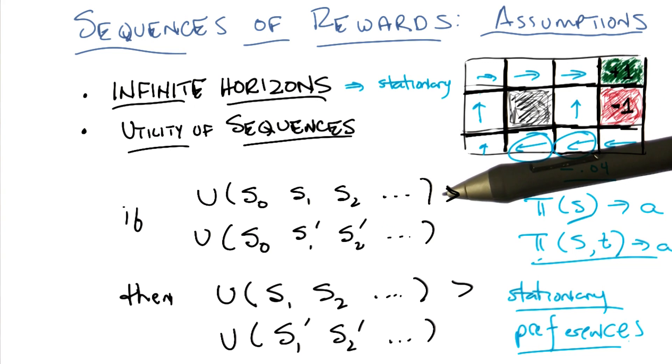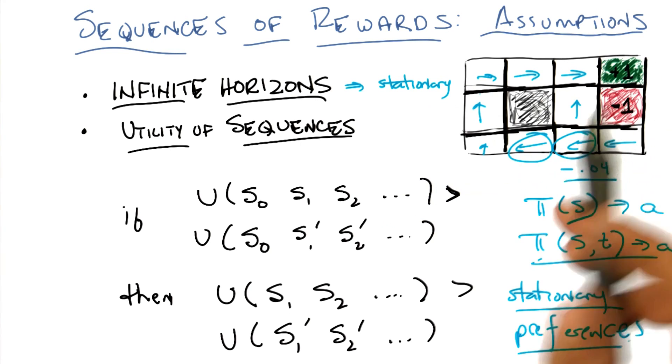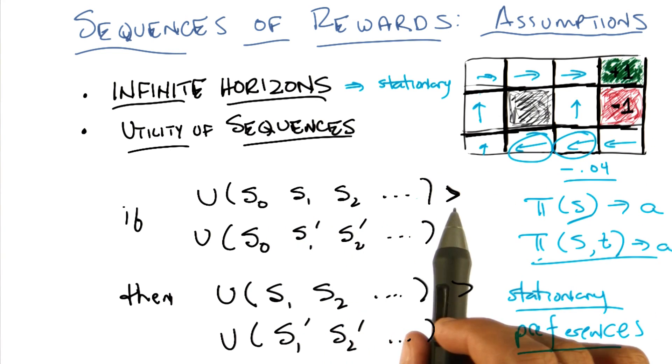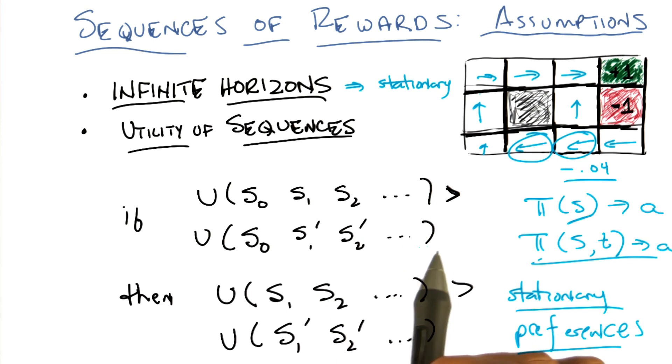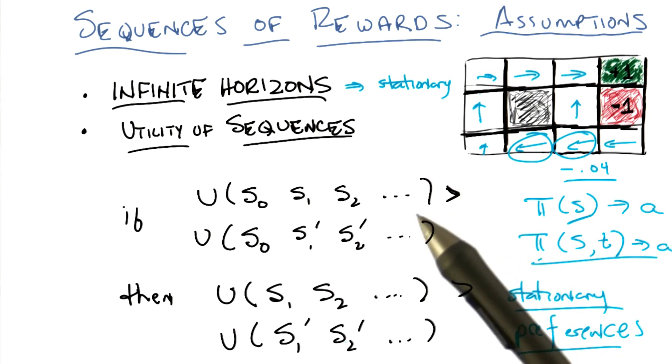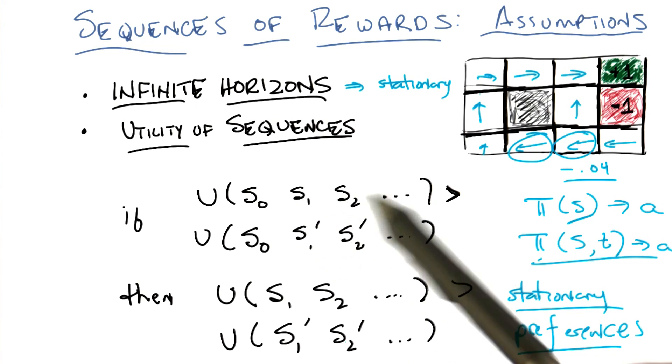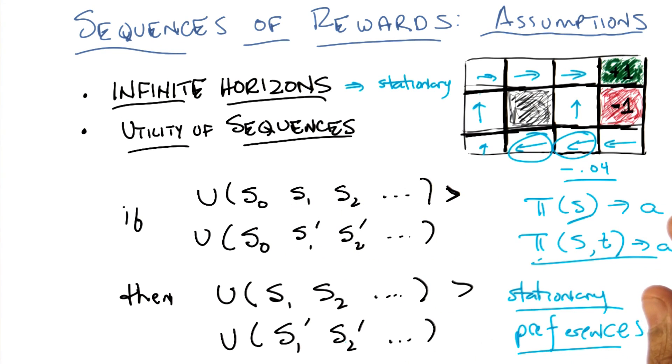And another way of saying it is that if I prefer one sequence of states today over another sequence of states, then I prefer that sequence of states over the same sequence of states tomorrow. So isn't this just obvious? Because whatever the rewards are for those two cases, we're just adding the reward that we get for S0, so it's going to be the same. Ah, but listen to what you just said. You just said, well, it'll be the same because all we're doing is adding the reward for S0. But what did we ever say about adding up rewards?